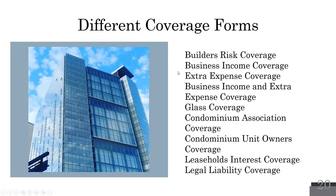Extra expense coverage provides money immediately at the time of a loss to get up and running as soon as possible — it begins immediately, with no waiting period. Business income has the 72-hour deductible; extra expense begins right away. For example, a daily newspaper that can't print due to fire: extra expense gives you money immediately to find a location and get printing again. If you can't get up quickly, business income replaces lost revenues. You can buy business income alone, extra expense alone, or both together.